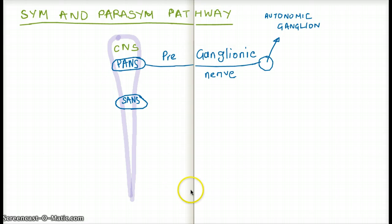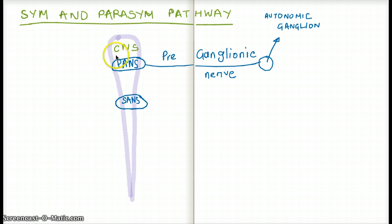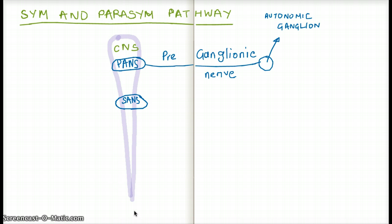Let's imagine that this purple thing here is our central nervous system. The central nervous system consists of the brain and the spinal cord — this is an easy picture to depict it. From the central nervous system, we have the parasympathetic nervous system and the sympathetic nervous system coming out.